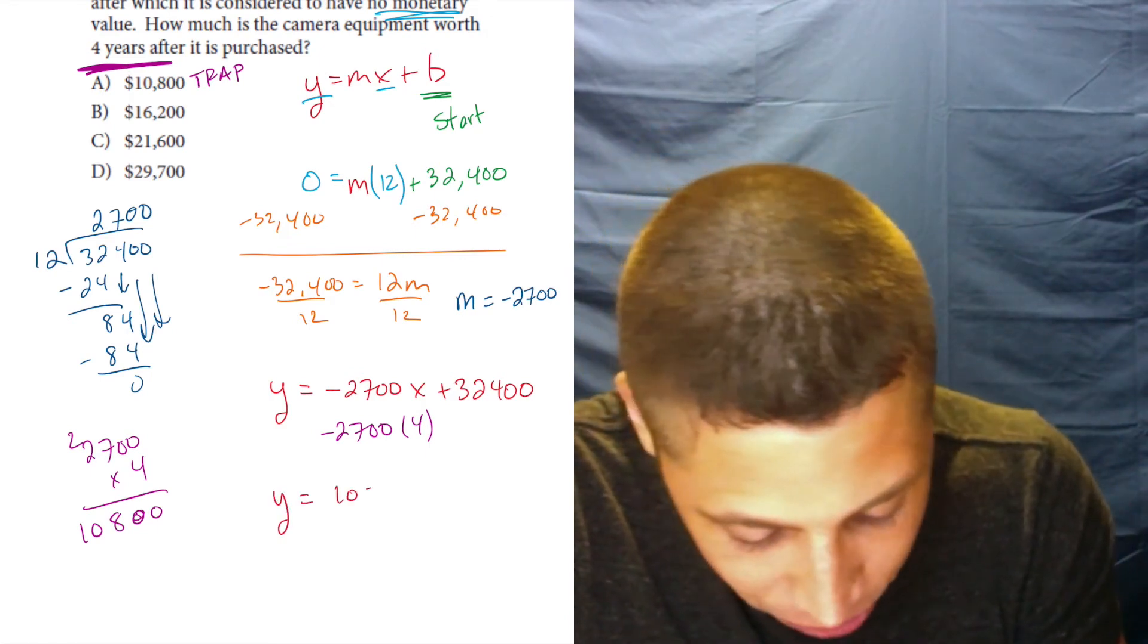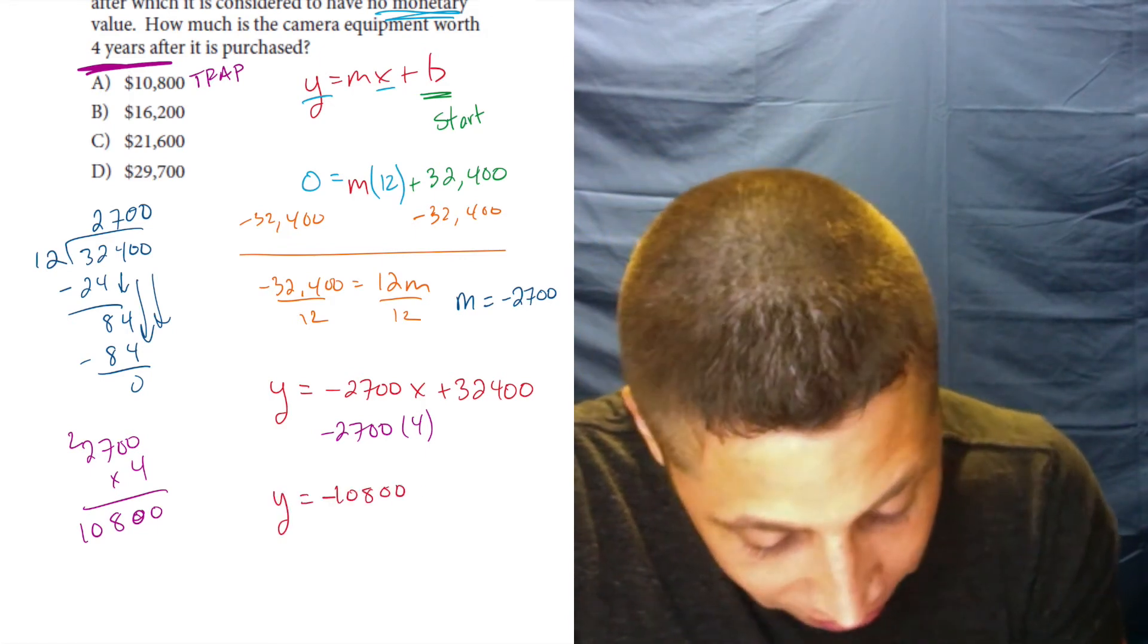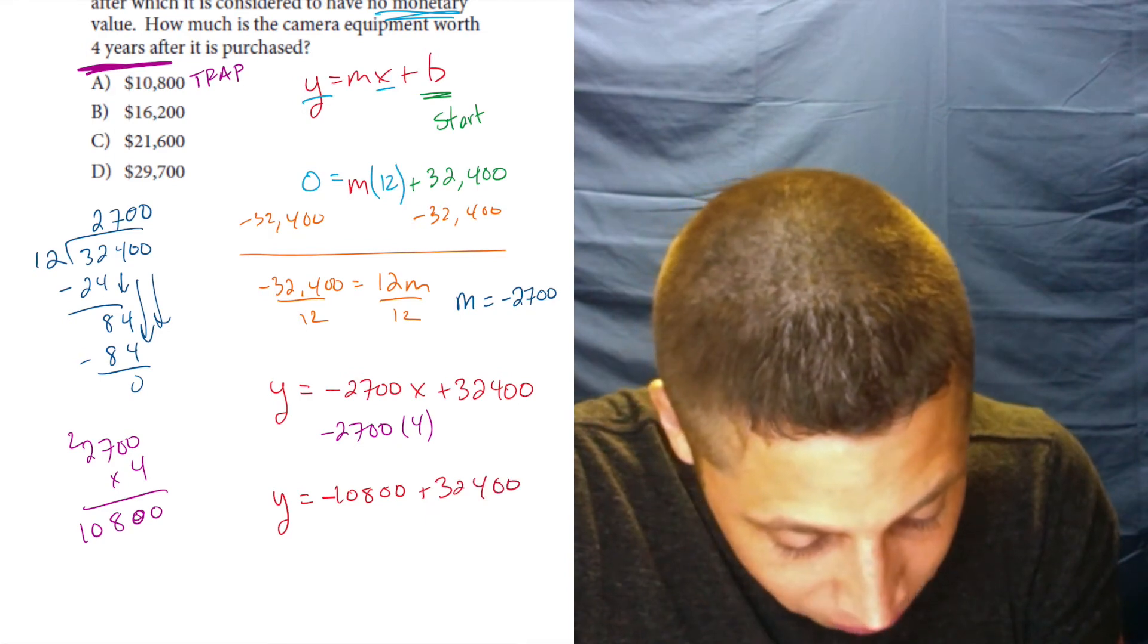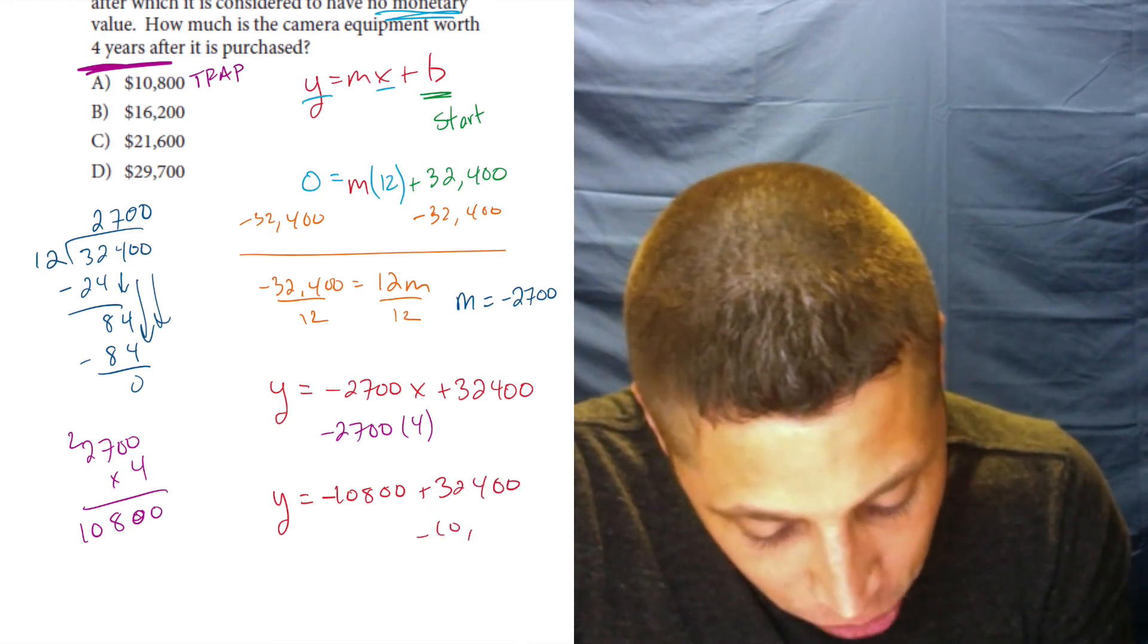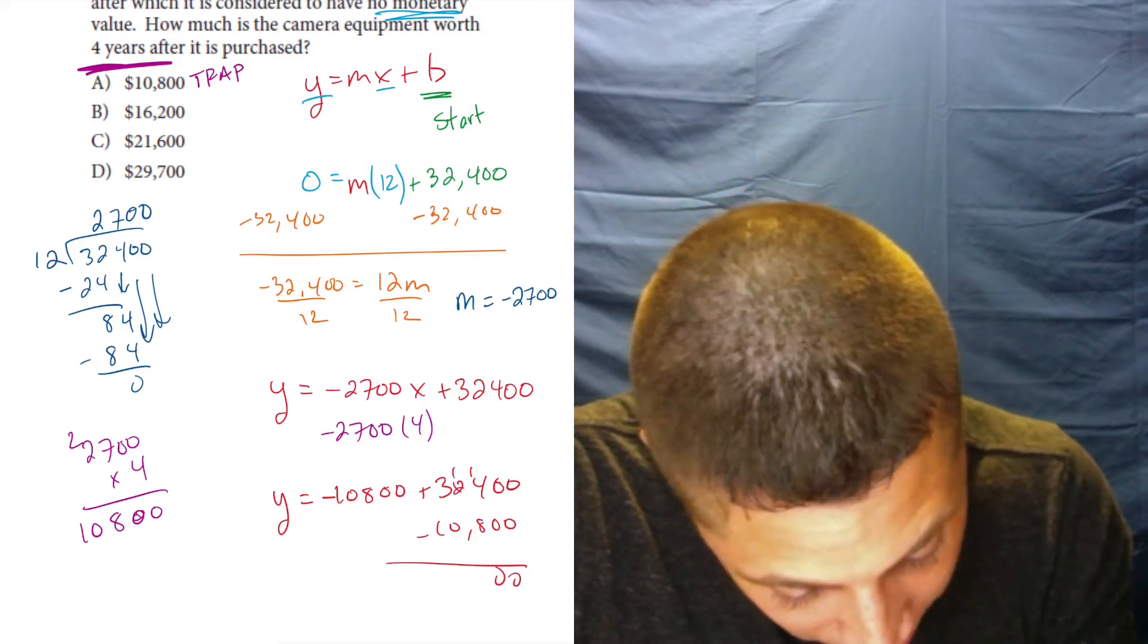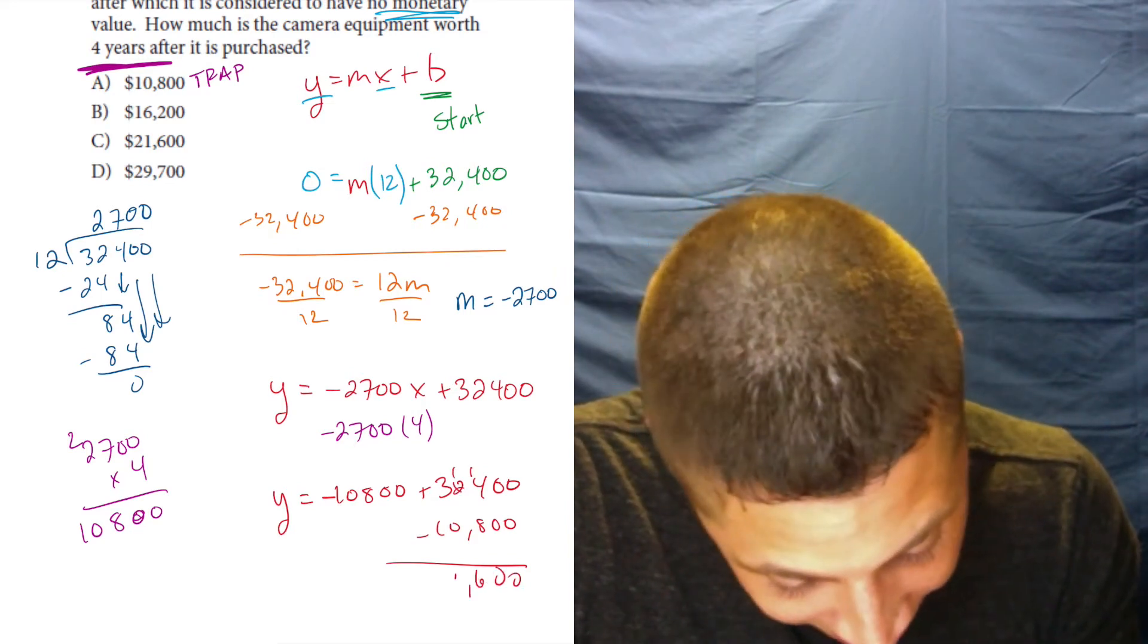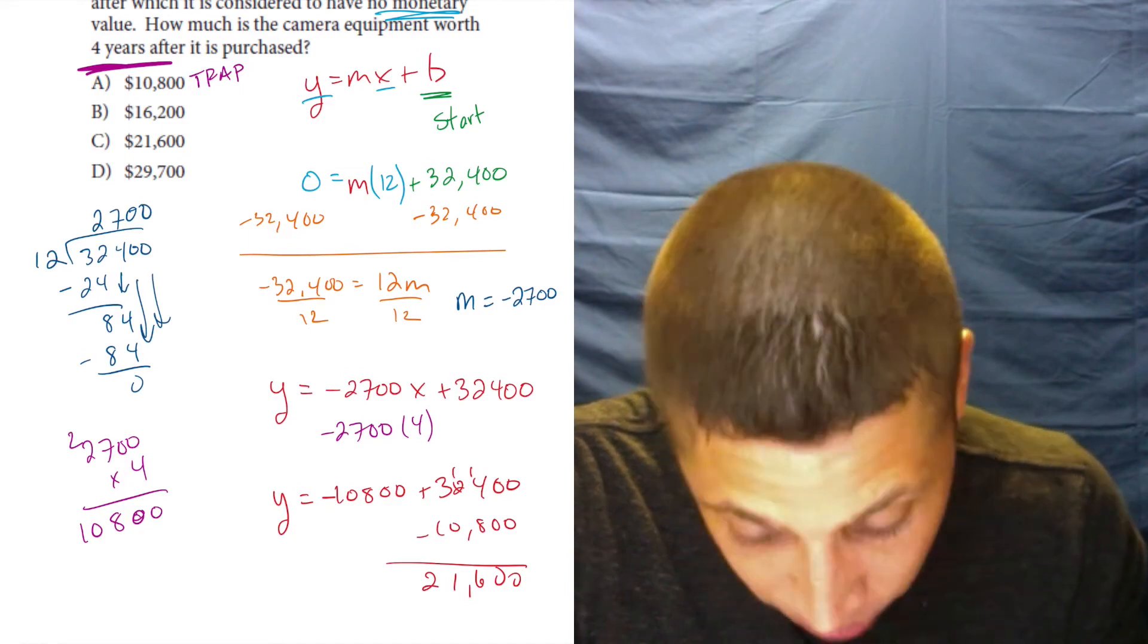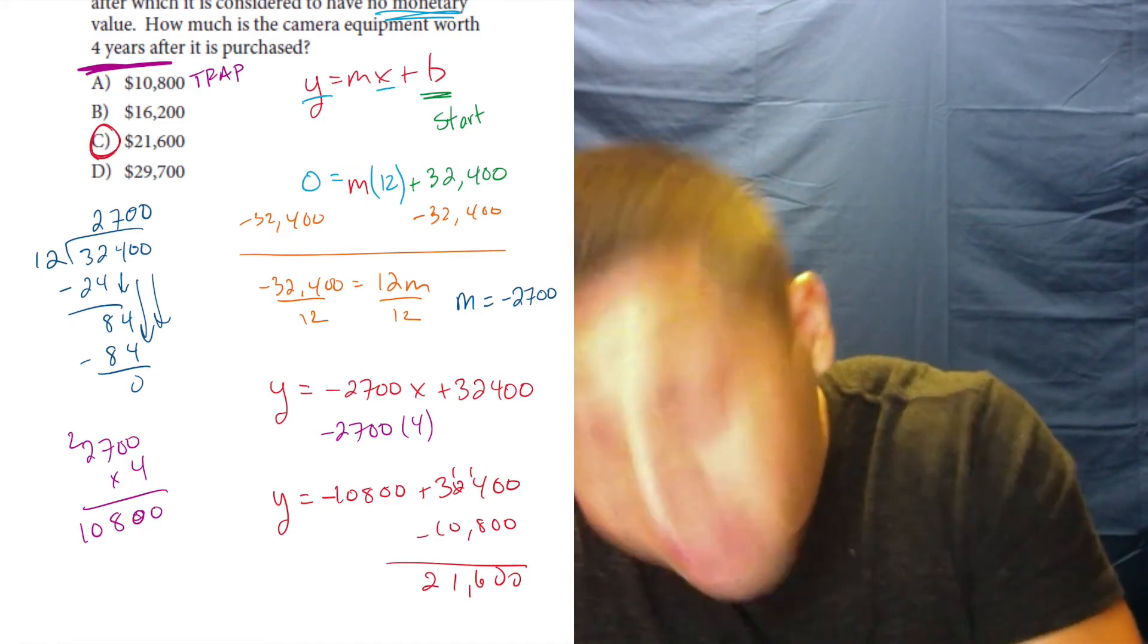now it's y is equal to negative 10,800 plus 32,400, which means we subtract the 10,800—six, one, two. And we get C.